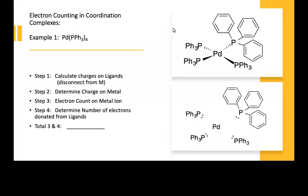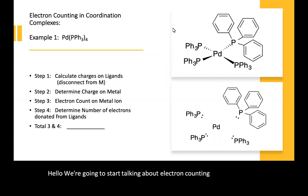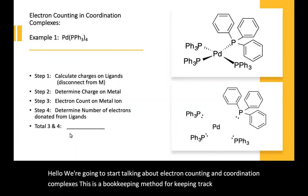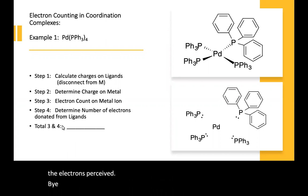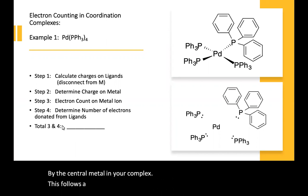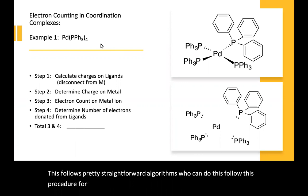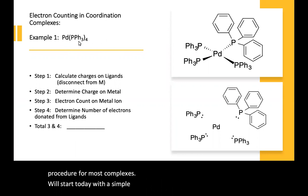We're going to start talking about electron counting in coordination complexes. This is a bookkeeping method for keeping track of the electrons perceived by the central metal in your complex. This follows a pretty straightforward algorithm, so you can follow this procedure for most complexes. We'll start today with a simple one and work through a few different examples.